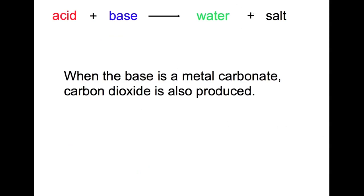So when we're writing out word equations for the acids and bases neutralization reactions, we have our acid plus our base to give us water and a salt. This happens for all of your bases. If your base is a metal carbonate, as in the example before, you'll also get carbon dioxide produced.